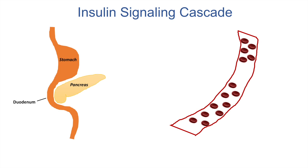So after you have a meal, your blood glucose levels will increase. The pancreas, which is an organ located adjacent to the duodenum — which is the first part of your small intestine — will actually detect the increase in blood glucose levels.